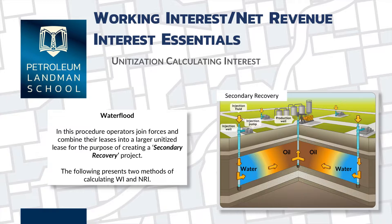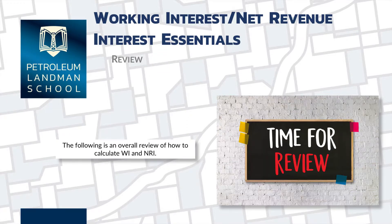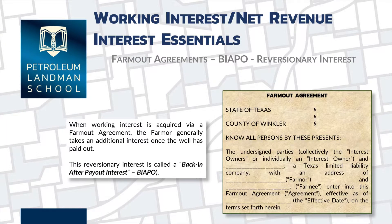This chapter goes in-depth regarding calculating interest in a unitized lease for secondary recoveries, such as water floods. This chapter is a step-by-step review of the procedures in calculating these interests.